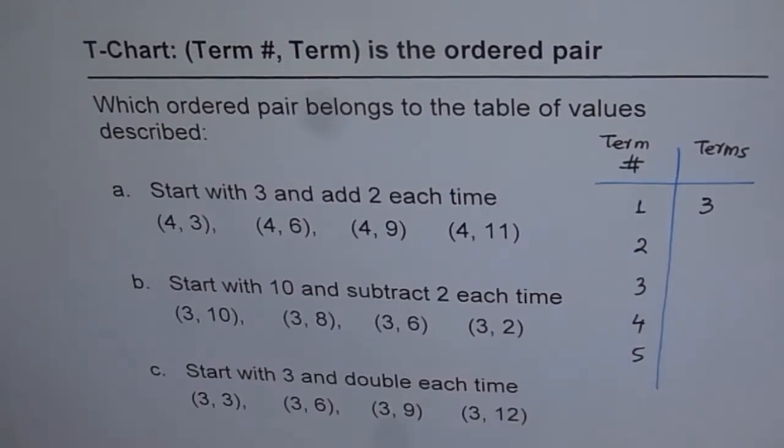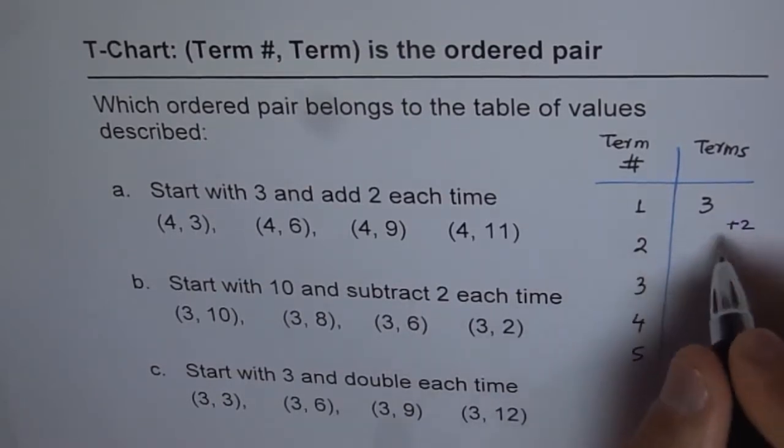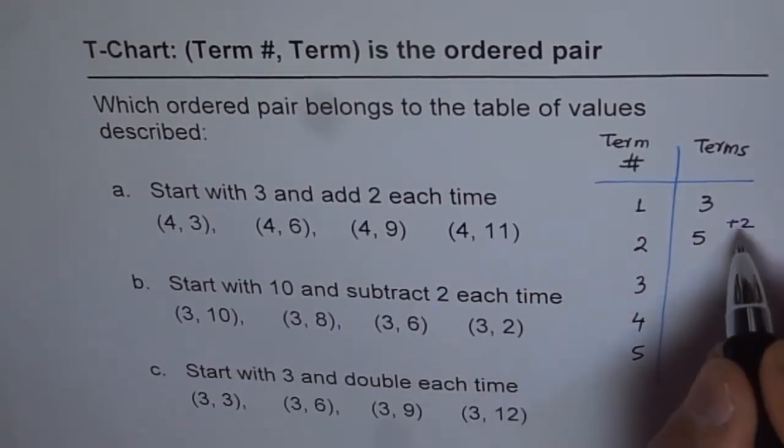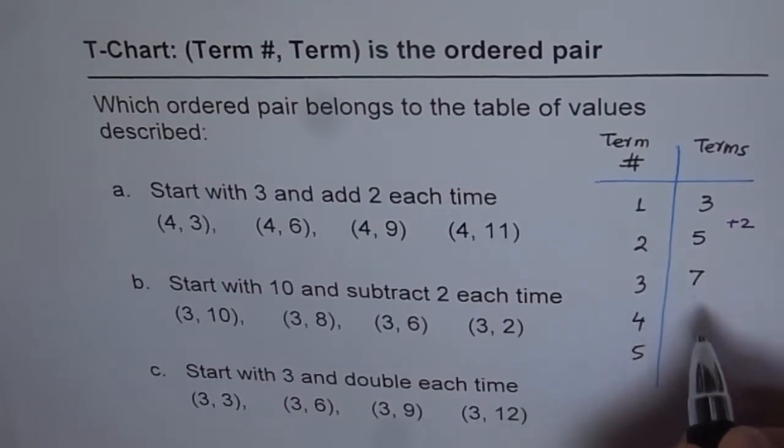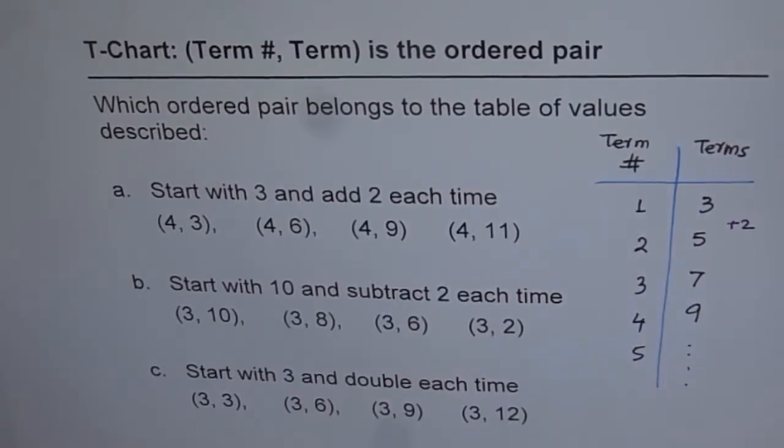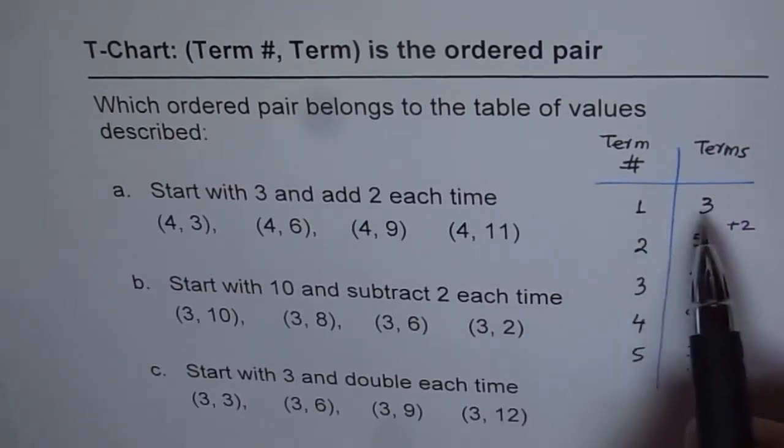So we will do plus 2 to this and get the next term which will be 3 plus 2, which is 5. And then again plus 2 will give us 7. Plus 2, 9 and so on. So that becomes your t-chart.